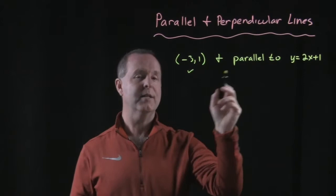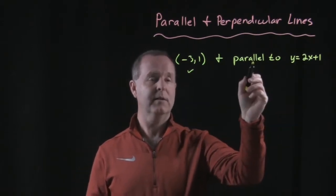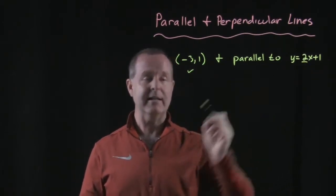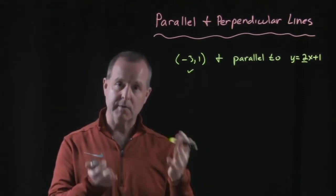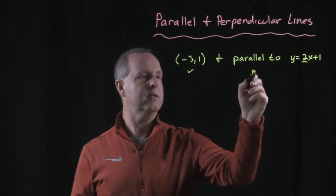Yes we do, because we know that our slope is parallel to this line. If the slope of that line is 2, the slope that we're looking for is also 2. So we have m = 2.